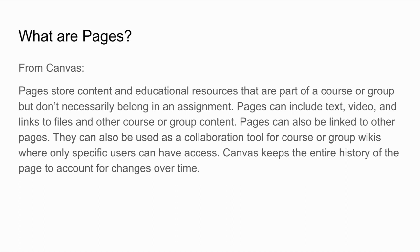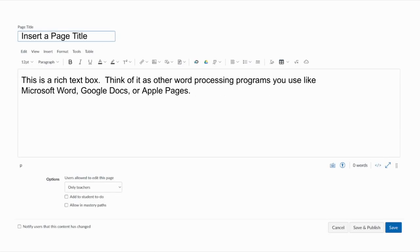So let's talk a bit more about what pages are in Canvas. From Canvas itself: pages store content and educational resources that are part of a course or group but don't necessarily belong in an assignment. It's text, it's video, it's links to files; you can link to other pages, use it as a collaboration tool, or have group wikis. Canvas keeps the entire history of the page to account for changes over time — it really can be like a wiki. Pages are content for instruction: maybe a short story you want them to read, or a lab experiment video.